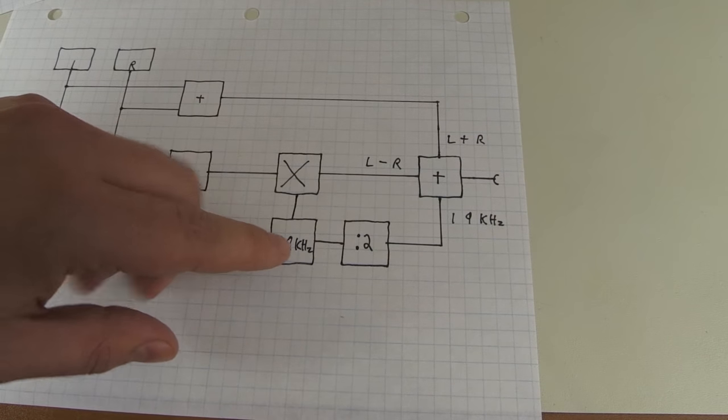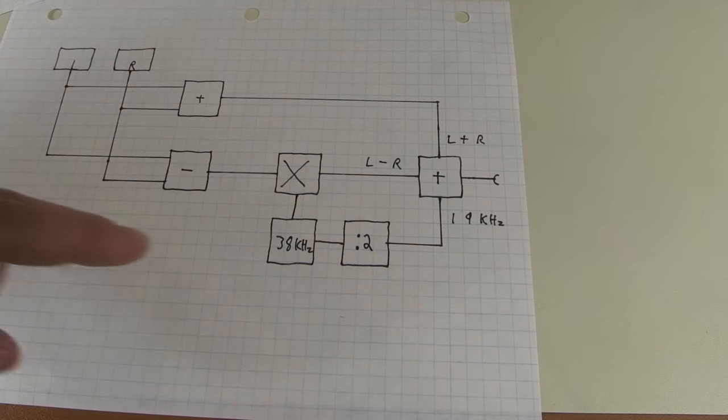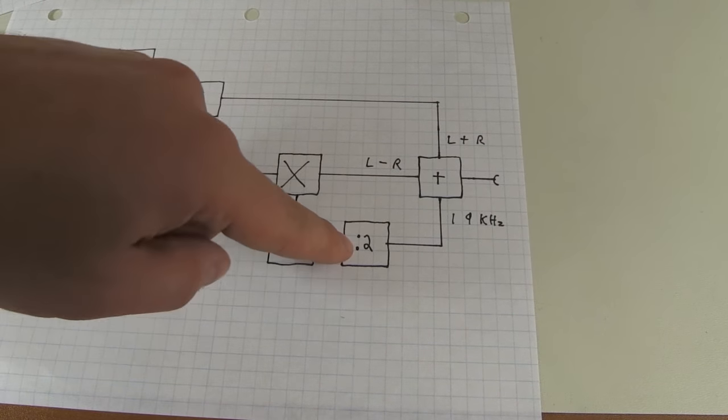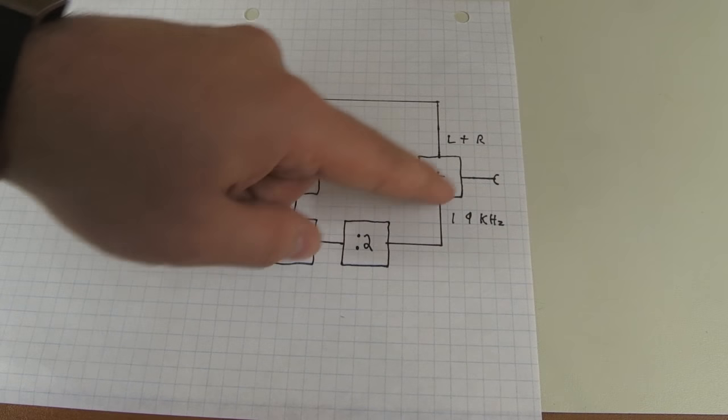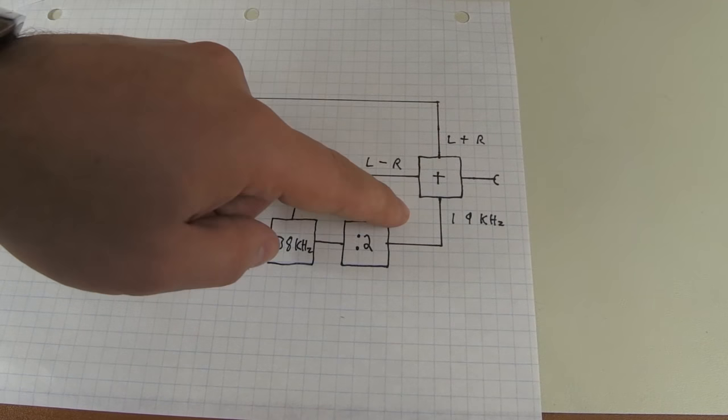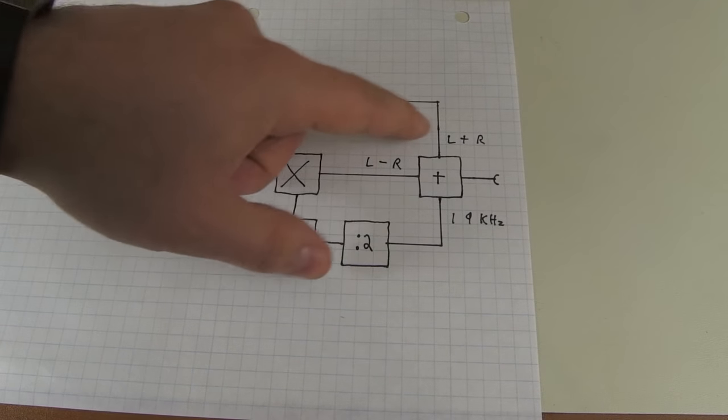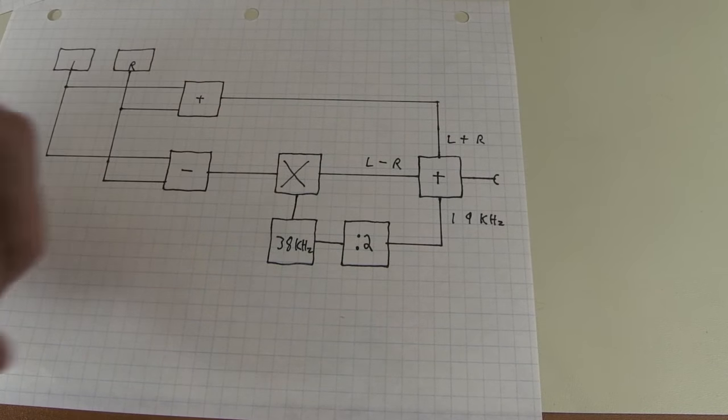Now to generate a phase coherent 19 kilohertz pilot tone, you simply take the 38 kilohertz signal right here divided by two and you throw it in another summing amplifier right here to get the composite signal. So again,